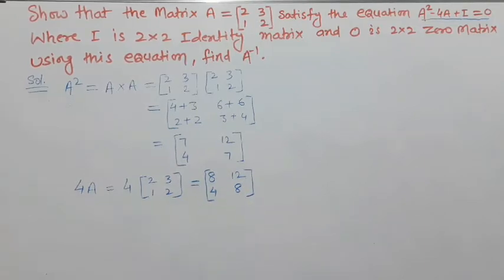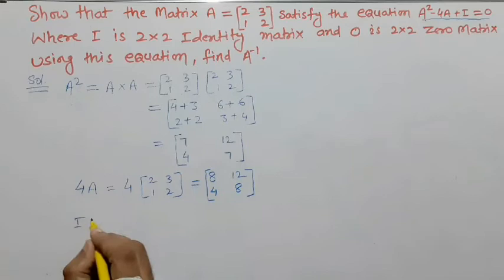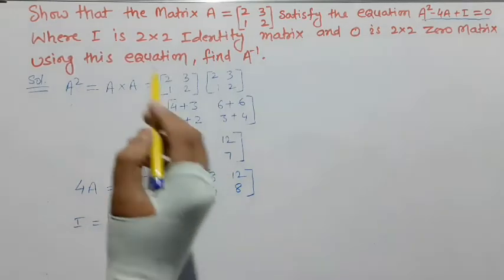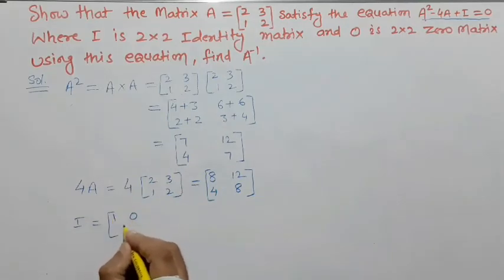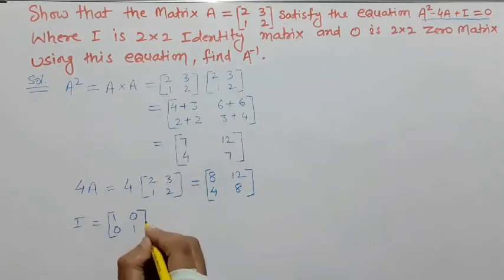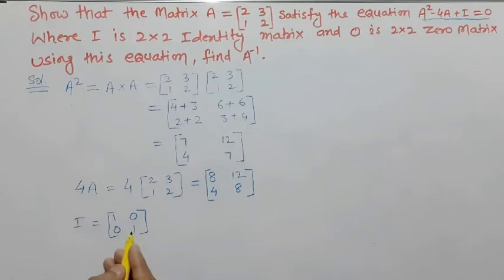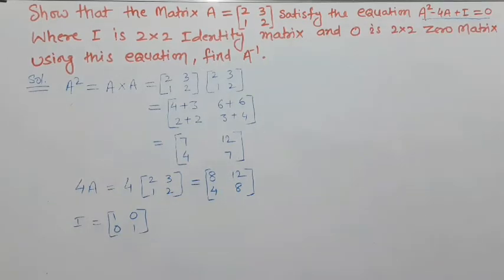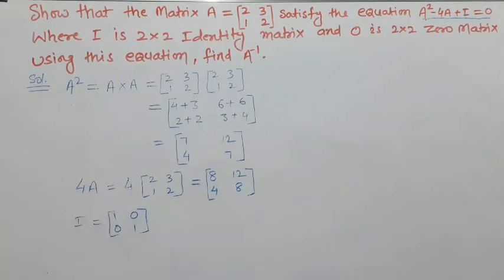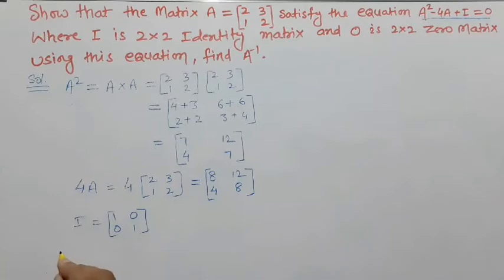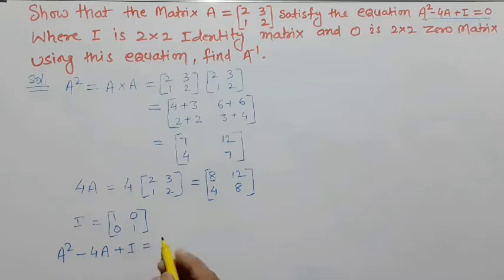I means identity matrix। Question में दिया है कि 2×2 का identity matrix use करना है। 2×2 identity matrix में diagonal elements 1 होते हैं और बाकी non-diagonal elements 0 होते हैं। अब हमें A² - 4A + I निकालना है।